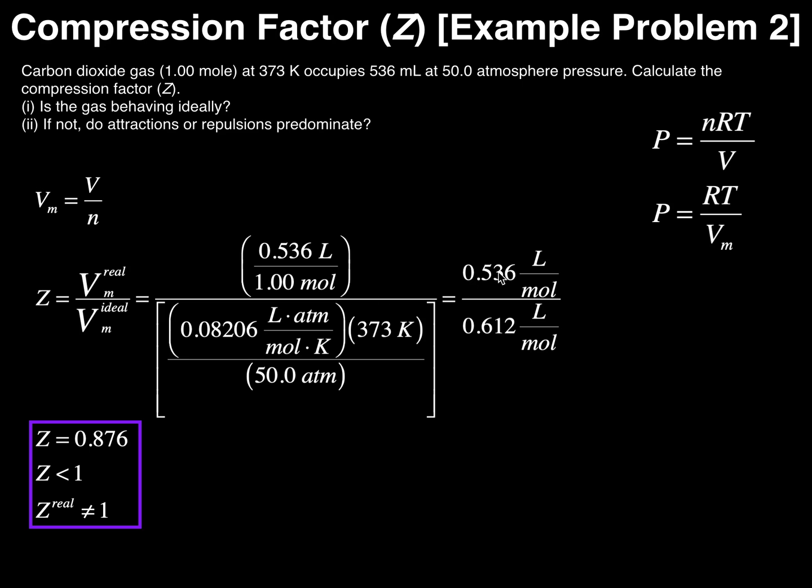So when I take this quotient, I get that the compression factor Z is equal to 0.876, which tells us a couple of things. One, the gas is not ideal. If it were ideal, the Z would be equal to 1. But in this case it's a real gas because Z is not equal to 1.